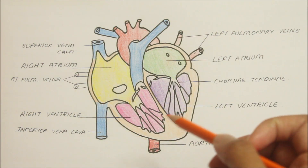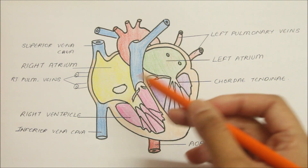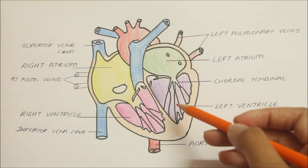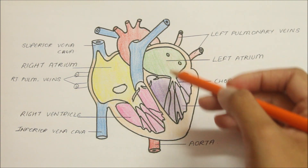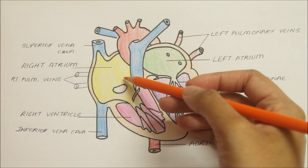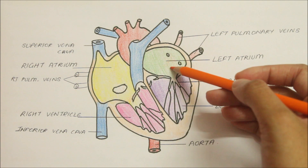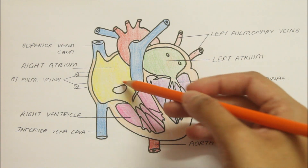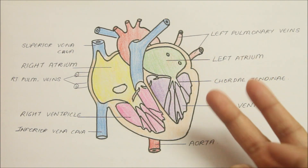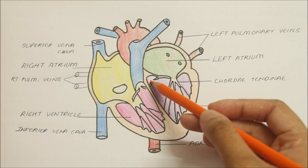Moving on to the structure of the heart, let's look at the valves. The valves maintain unidirectional flow of blood and prevent its regurgitation back in the opposite direction — that is, they prevent backflow from the ventricles to the atrium. There are two pairs of valves in the heart: the atrioventricular valves and the semilunar valves.